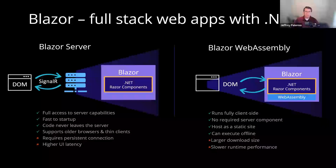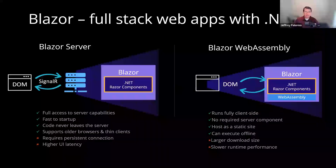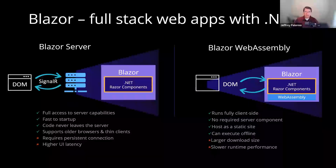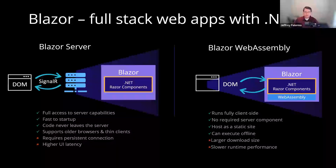Blazor is just a user interface framework. It sits on top of C#, on top of .NET. For saving data to relational databases you've got Entity Framework. For programs talking to each other, you've still got Web API. This is just a user interface framework. The other choices are MVC, React, Angular, WinForms, and WPF.